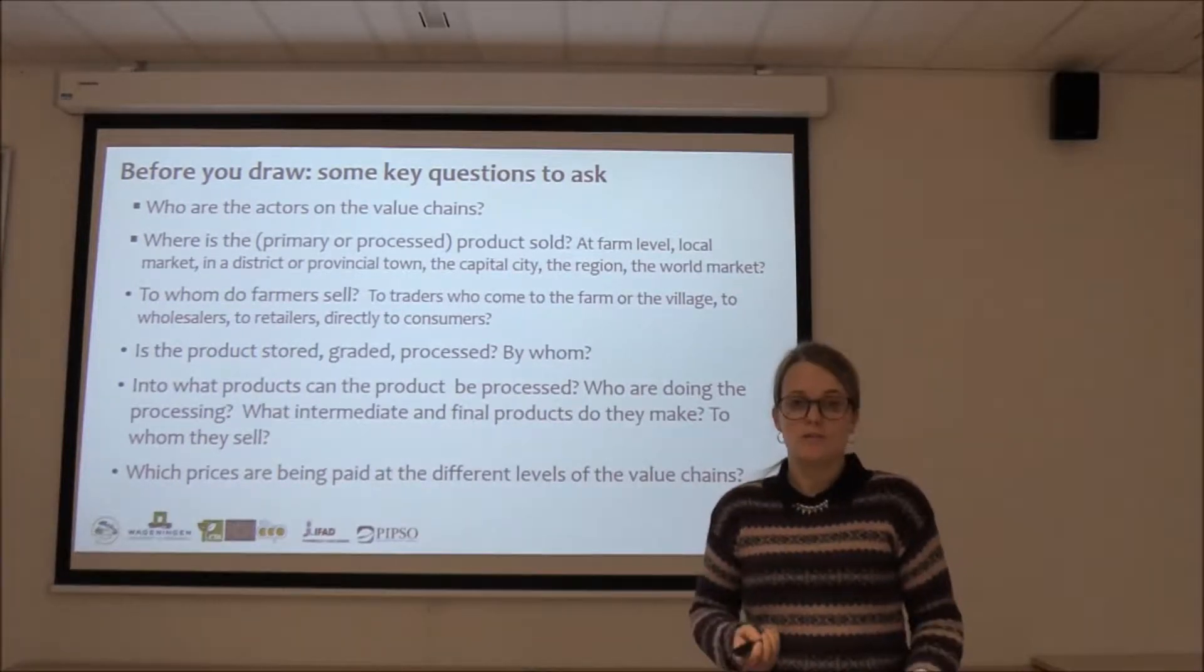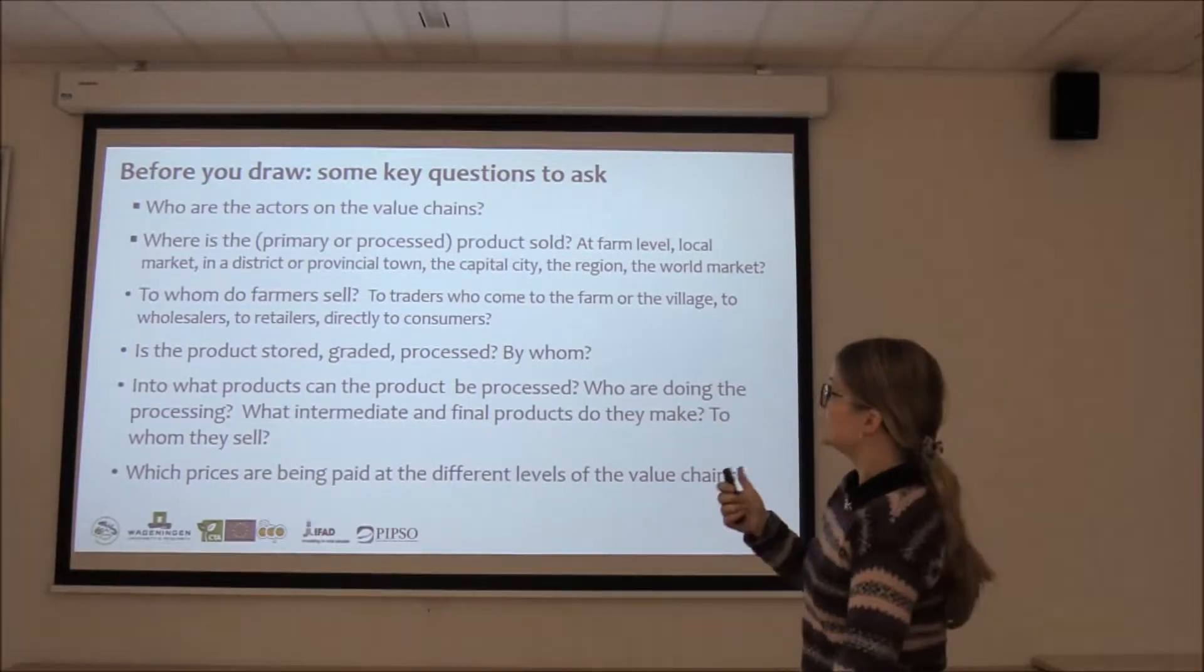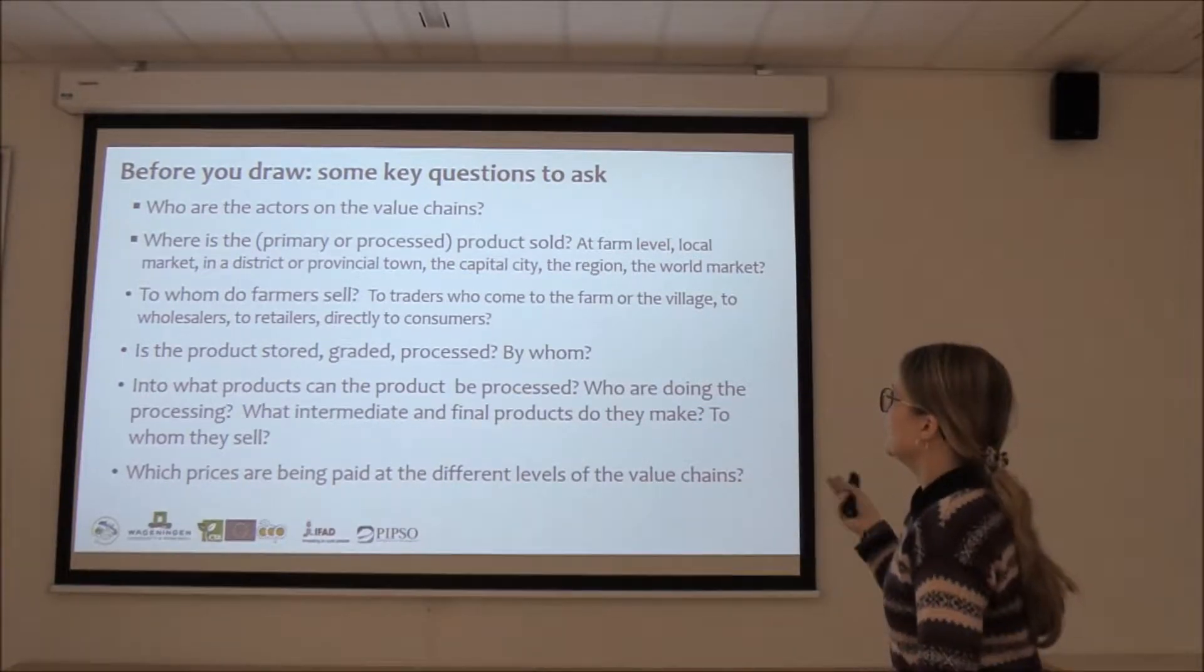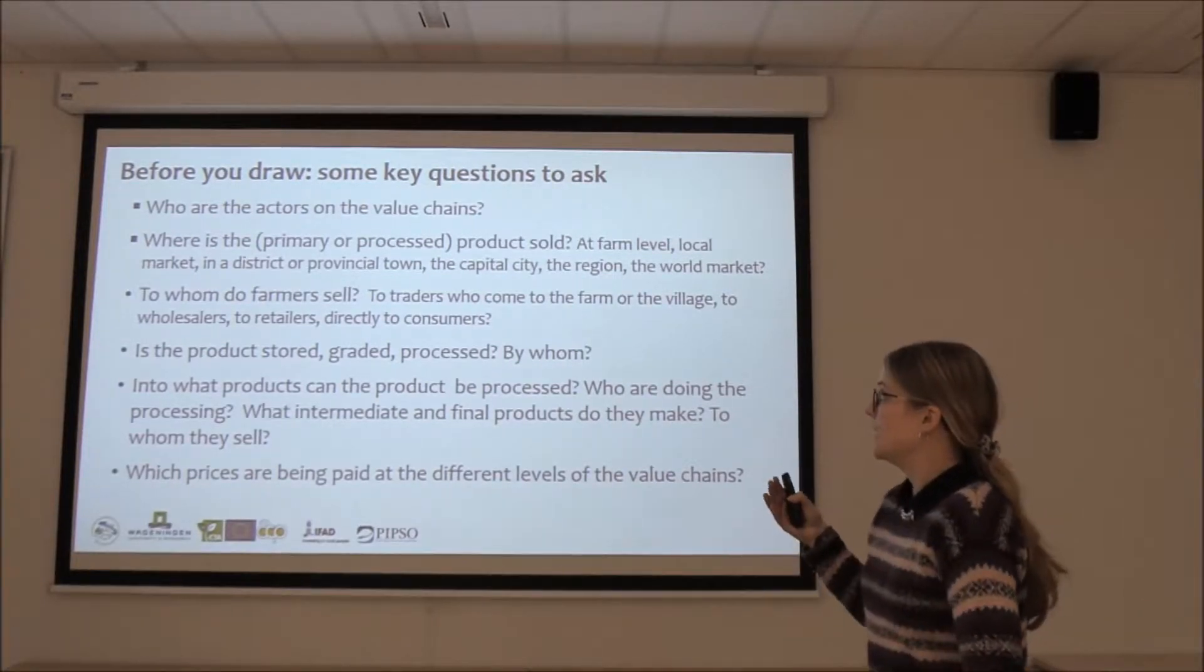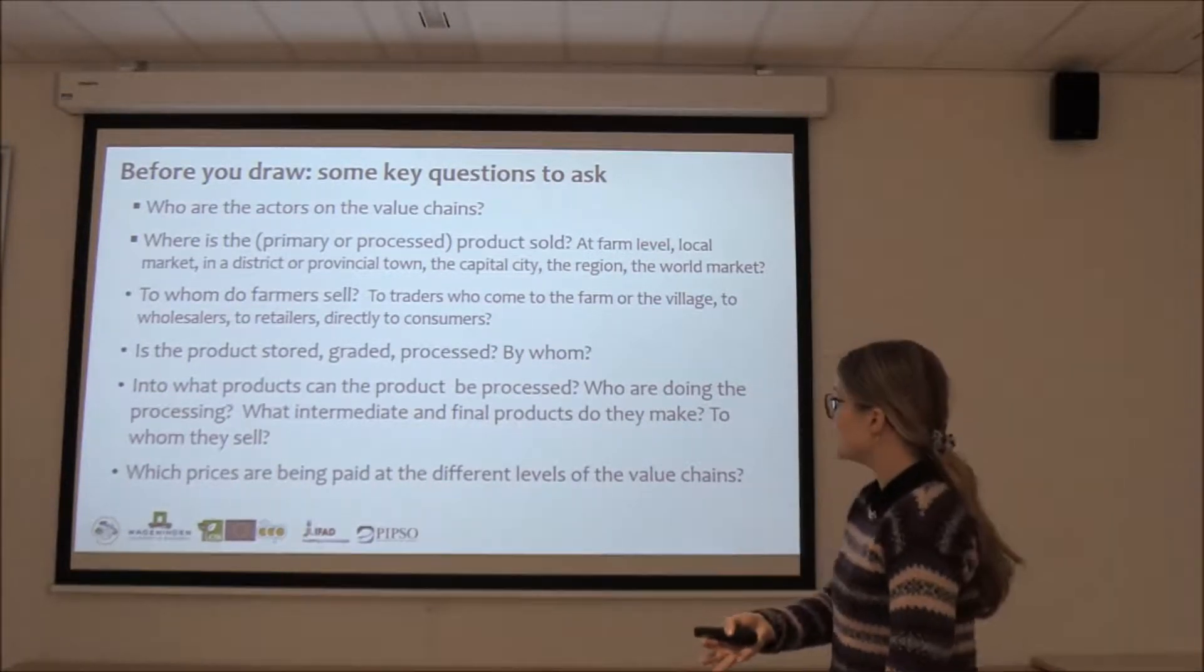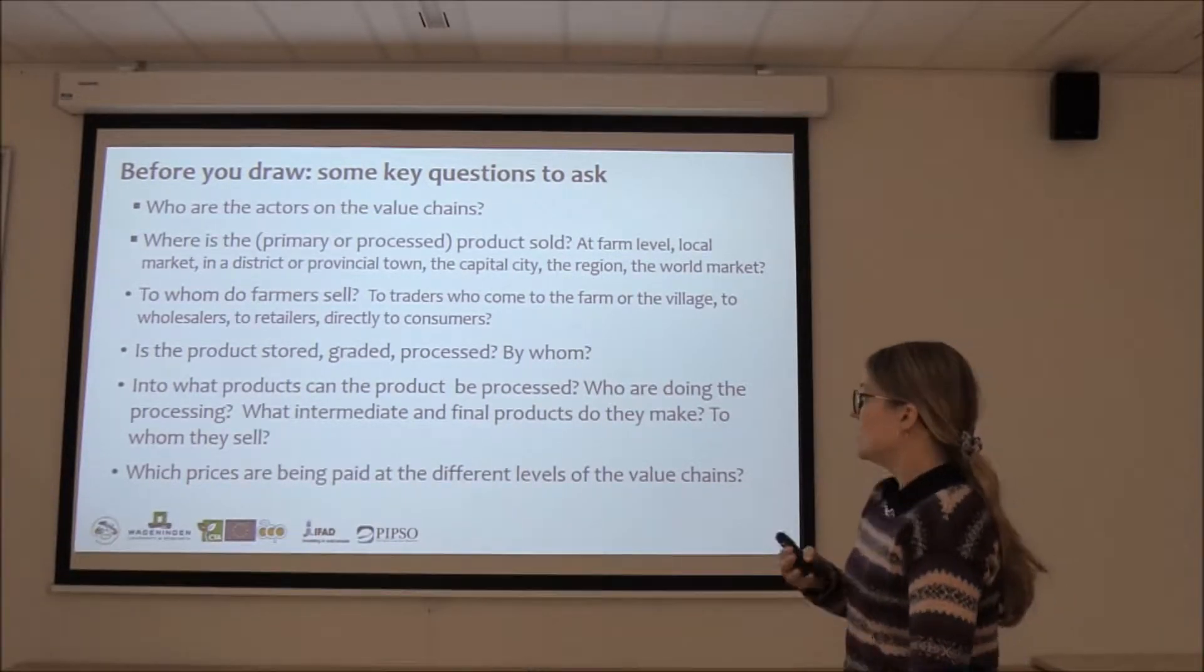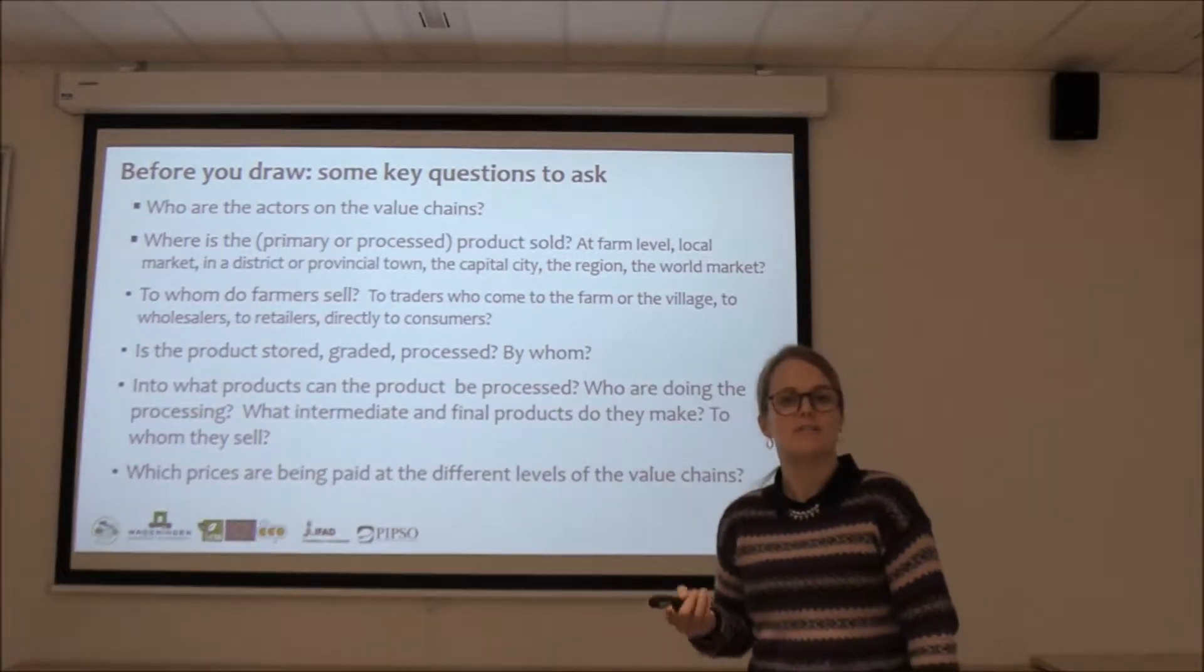Before you draw, there's quite some really important questions to ask. So who are the actors? And where is the product sold? Like we have given some examples before. Is it at farm level or in the city or on the world market? And to whom do farmers sell? And is the product then stored, graded, processed? What value adding activities are done and by whom? And into what different products can the product itself be processed? And who is doing that? And who is selling to whom? And what are the prices that are being paid at the different levels of the value chain?